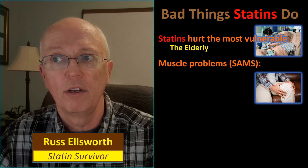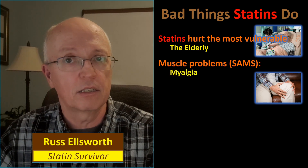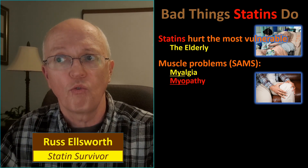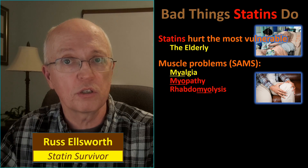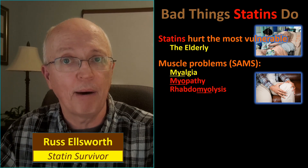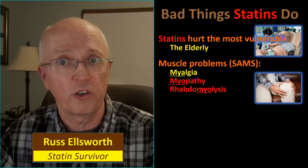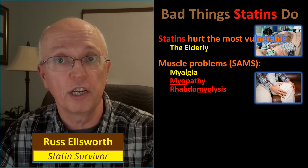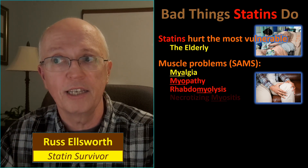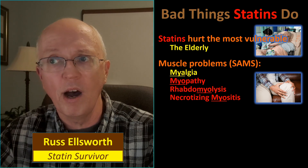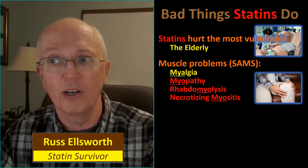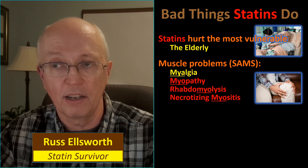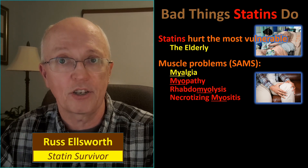Muscle problems — SAMS that I mentioned before. There's myalgia, that is muscle pain; myopathy, that is skeletal muscular problems; rhabdomyolysis, that's when the muscles start to disintegrate and the byproducts of that disintegration get into your circulatory system and into organs — it is an often fatal condition, very dangerous; and then there's necrotizing myositis. 'Myo' is a clue we're talking about muscles, and 'necrotizing' — you never want to hear that because 'necro' means something's dying. So this is when muscles actually die.